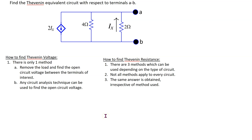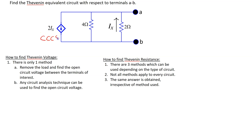In this example, we will look at how to find the Thevenin equivalent circuit for a circuit containing dependent sources only. Consider this given circuit of interest. The terminals A and B are marked, and this circuit has only one dependent source — a current controlled current source.